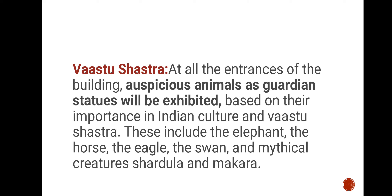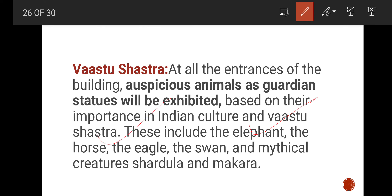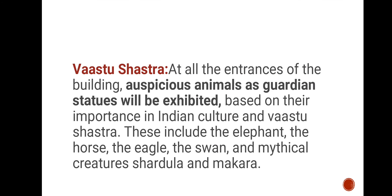Based on Vastu Shastra and Indian culture, auspicious animals as guardian statues will be placed at all entrances of the building. These include the elephant, horse, eagle, swan, and mythical creatures — Shardula and Makara. These guardian statues provide a spiritual touch rooted in Indian culture.